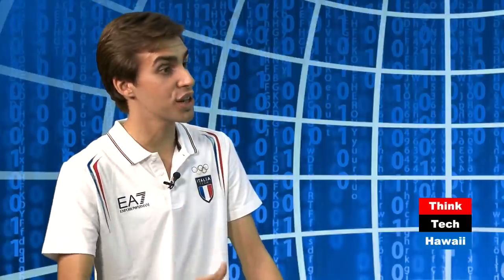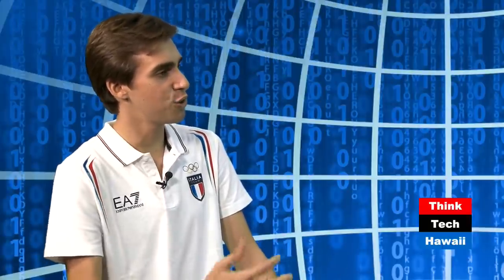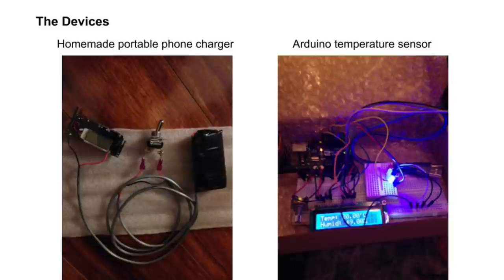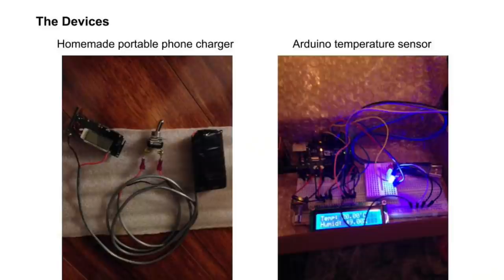Let's talk a little more about your science projects. Looking at the slide — the first picture on the left is my homemade portable phone charger, and on the right is the temperature sensor that allows me to sense whether the lithium ion battery, which is covered in black in the first picture, has an increase in temperature — meaning it overheats — which could cause a safety hazard, because the battery could overheat.